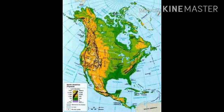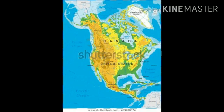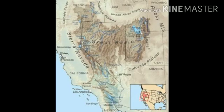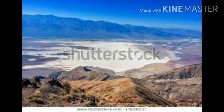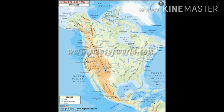The second physical feature is the Great Central Plains. The Central Plains are also referred to as the Great Plains of the Prairies. They lie between the Appalachians in the east and the Cordilleros in the west.